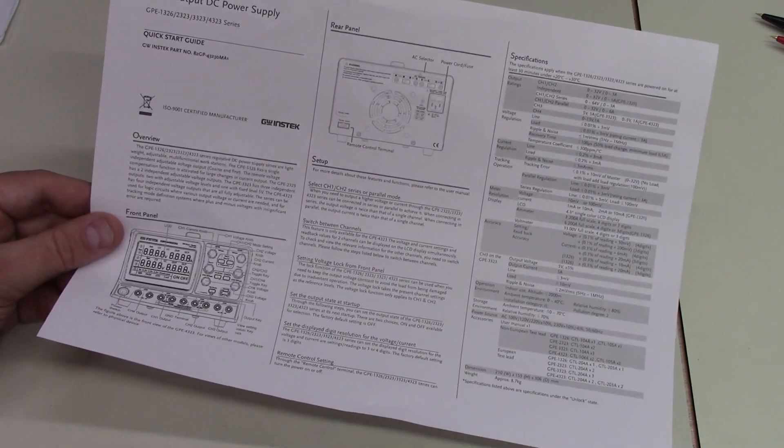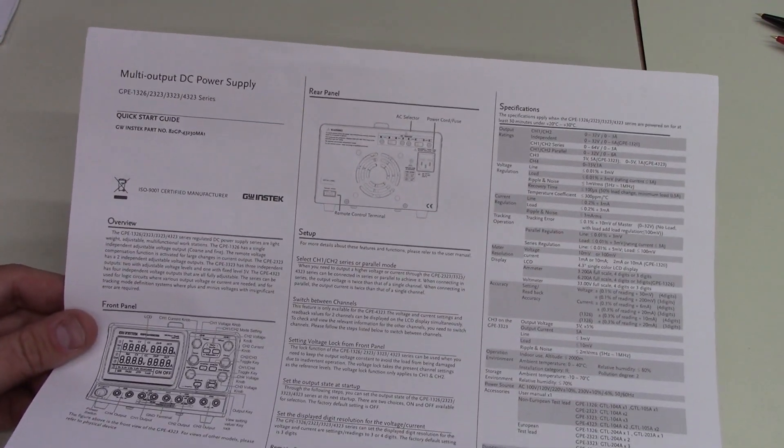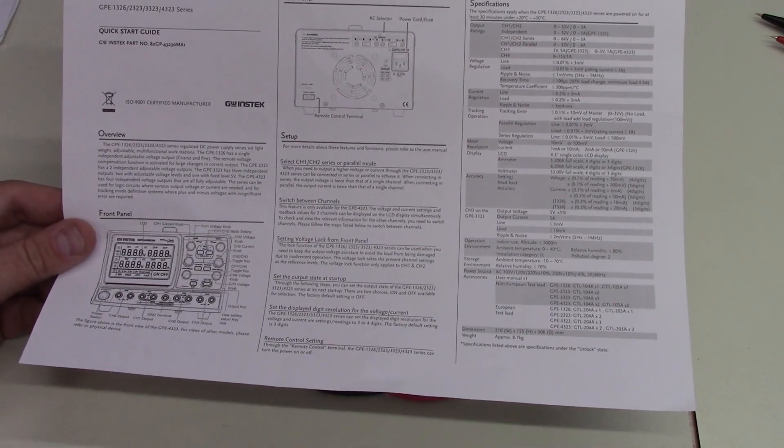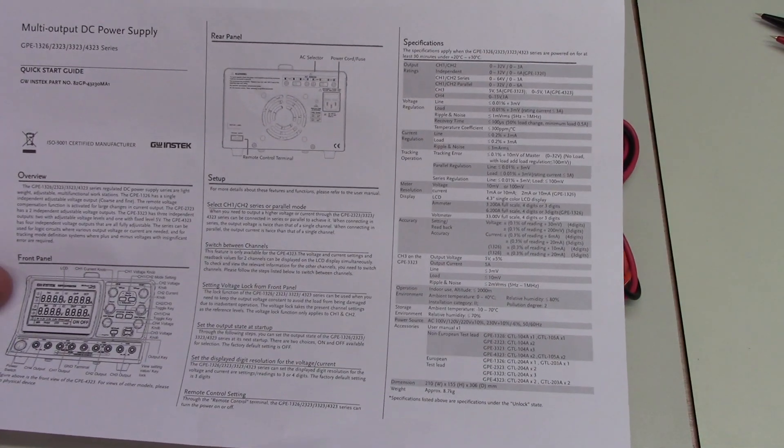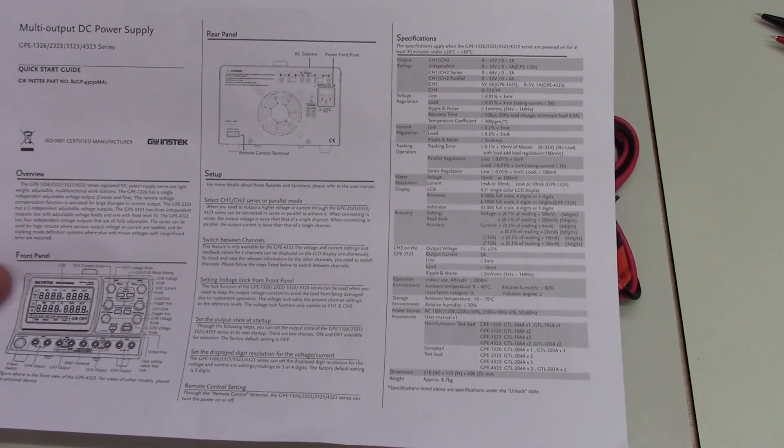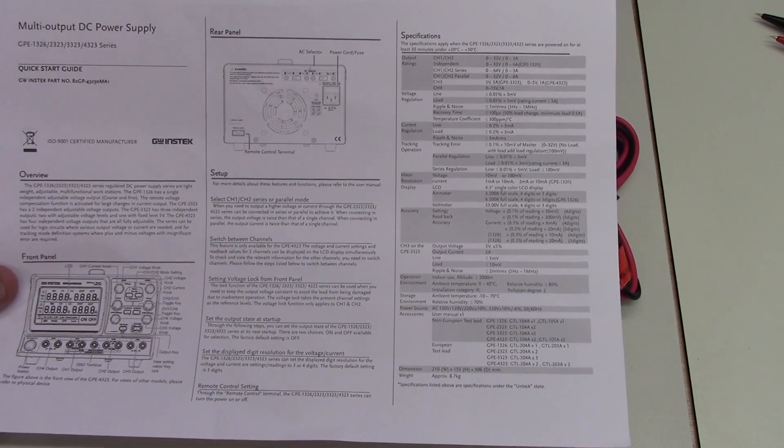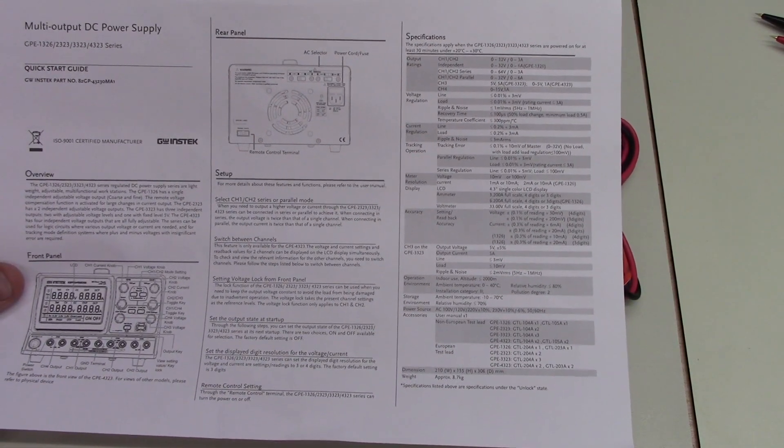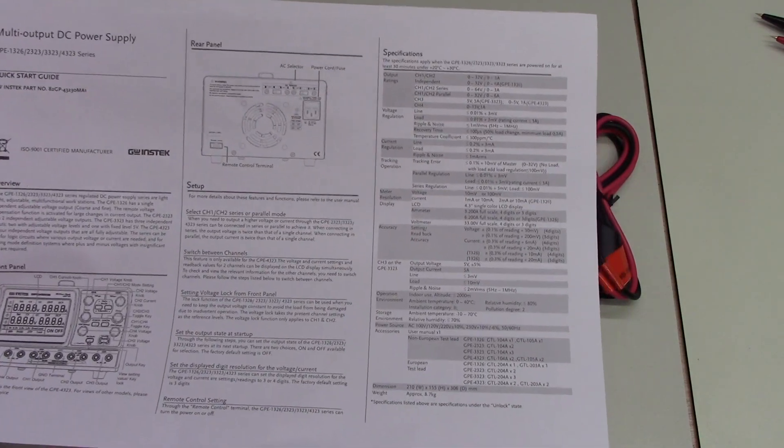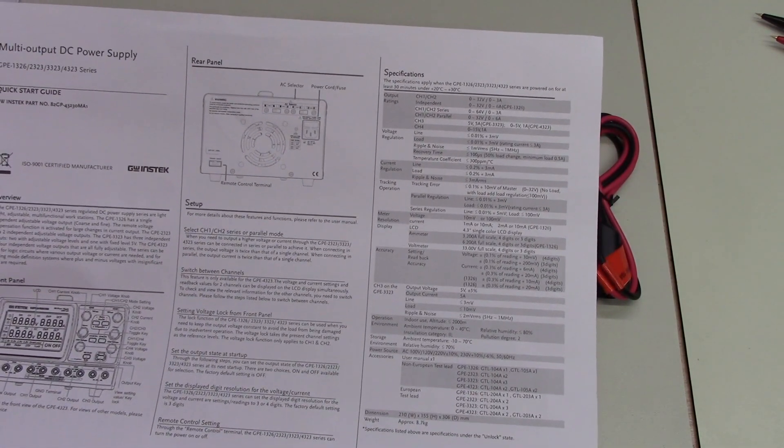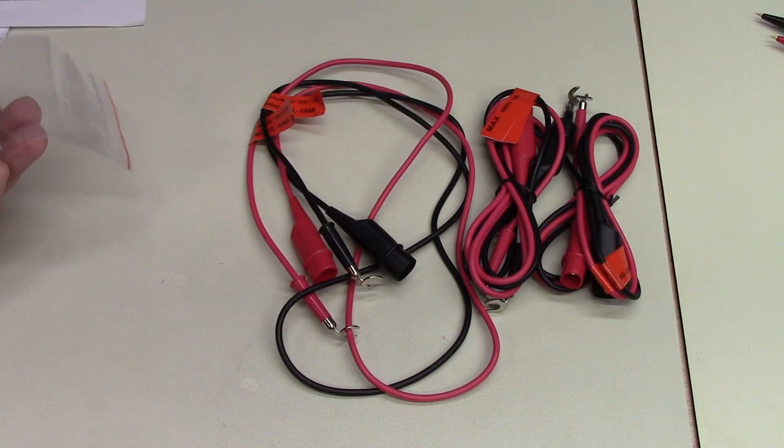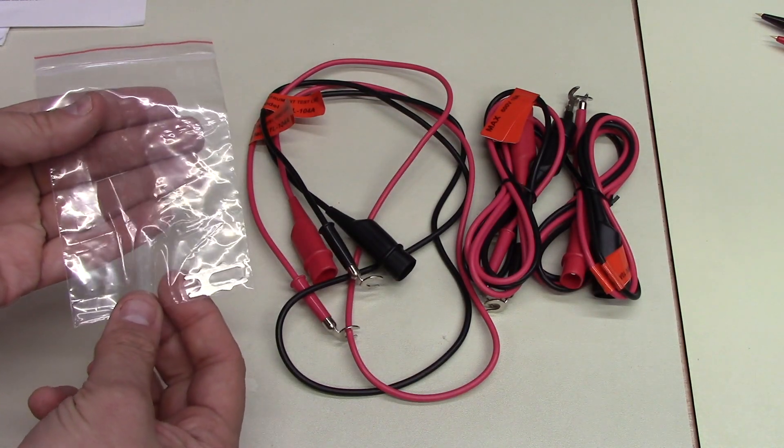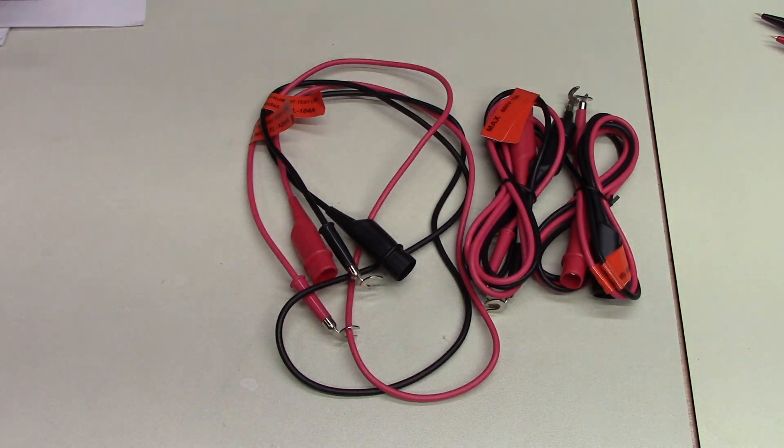There's what is termed a quick start guide, this document here, which is really more of a statement of the specifications rather than a useful button-by-button description of how to get it up and running. But that said, it's a nice little thumbnail sketch of what the unit can do. And then finally, it comes with the ground bar, which is nice. It will probably get lost immediately on my bench.